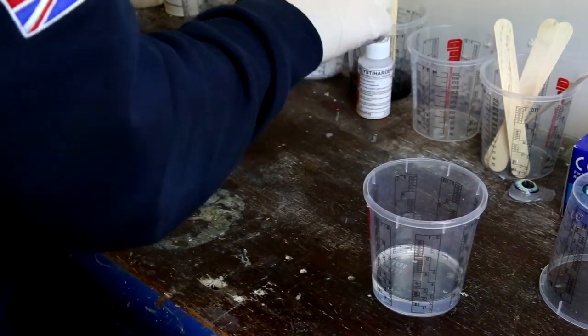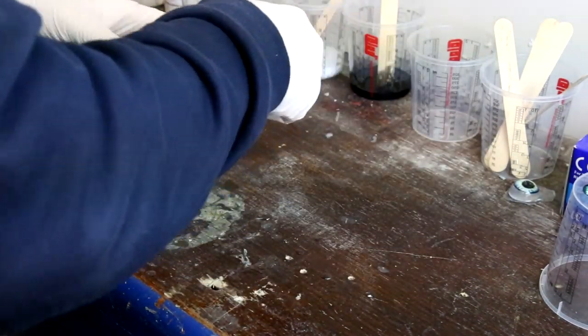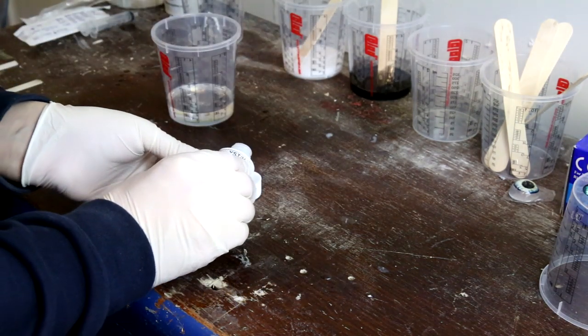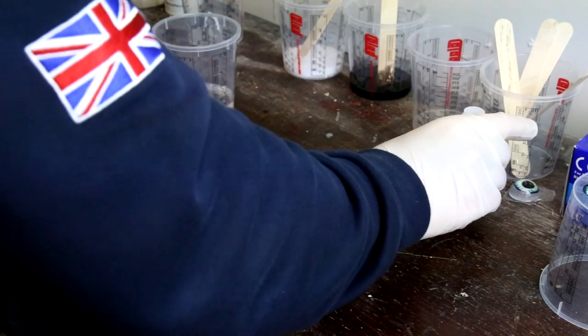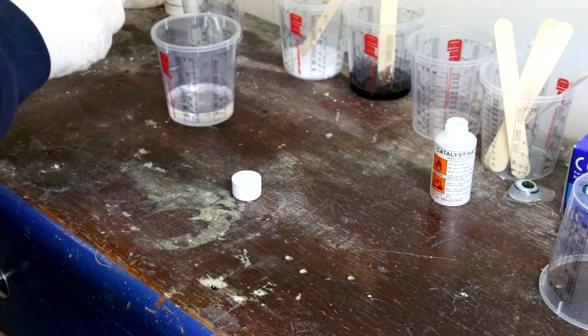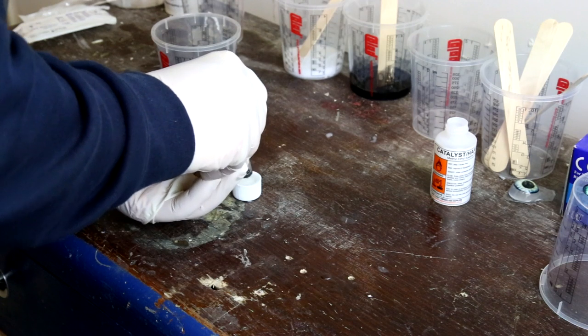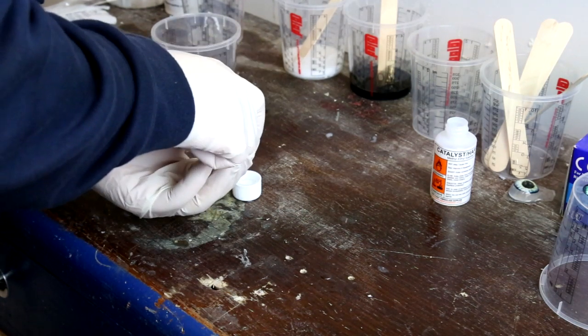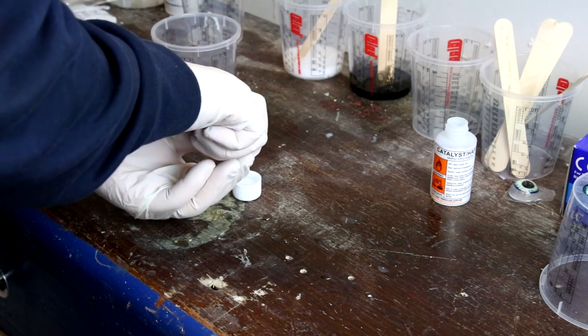Depending on what size kit you buy, you might not be able to fit the syringe into the catalyst bottle, so what I do is just pour a little bit into the lid. The catalyst is the most dangerous part of the whole thing, so be really careful with it. If you spill any, make sure you wipe it up straight away.